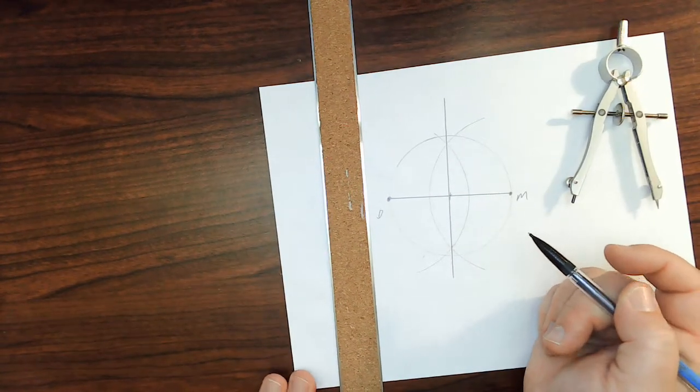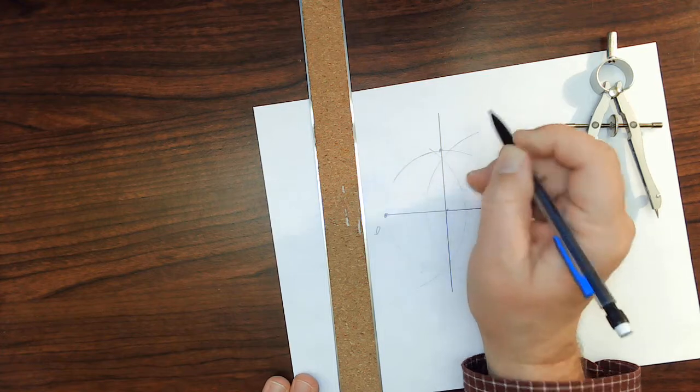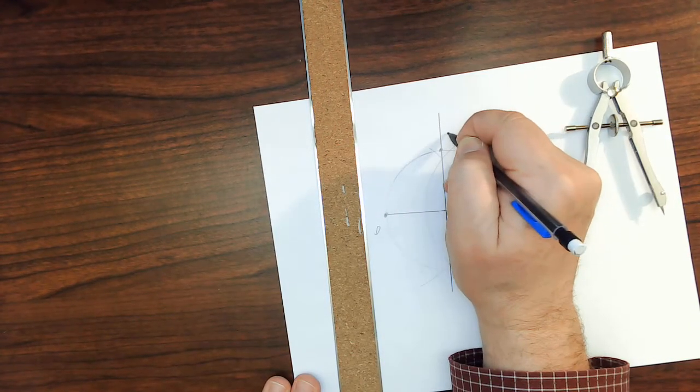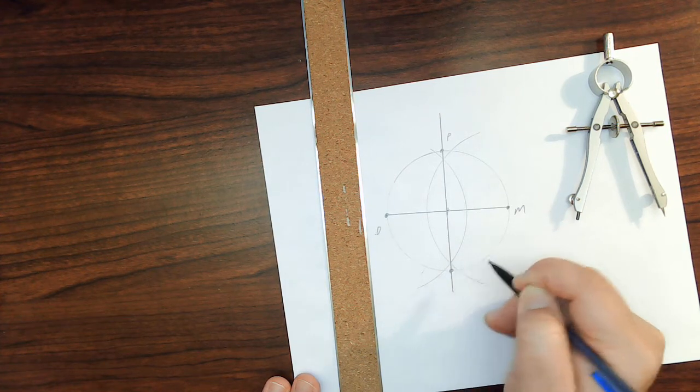And it does. Okay. I'm going to label this place where the perpendicular bisector intersects with circle P. And I'm going to label this place B.